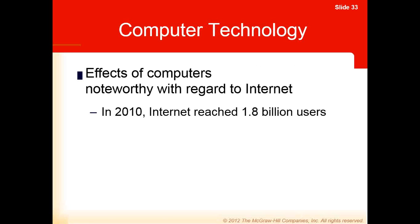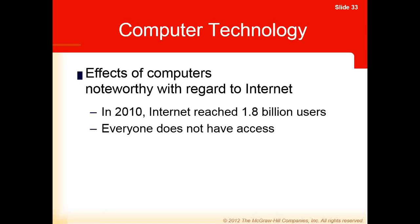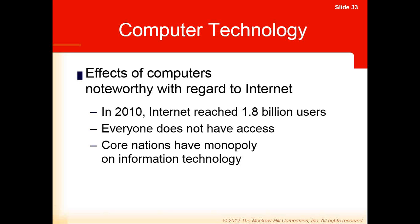In 2010, the Internet reached 1.8 billion users, and that number has continued to grow — roughly a seventh or eighth of the planet's population. Not everybody has access, and often that access is determined not so much by the affluence of the individual but by the affluence of the society in which they live. Recalling Emanuel Wallerstein's world systems analysis — core, semi-periphery, and periphery — core nations have a monopoly on information technology. The 1.8 billion users are mostly middle and upper class and concentrated in higher-income nations.